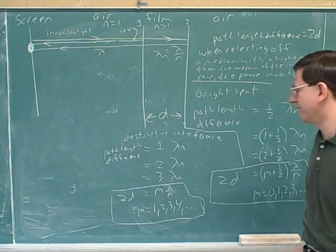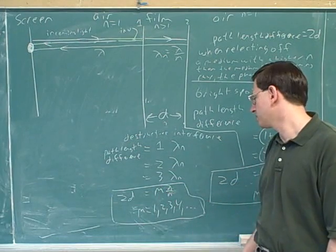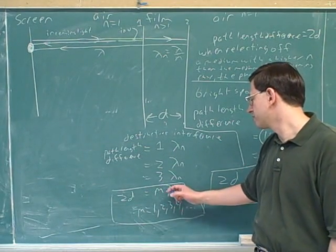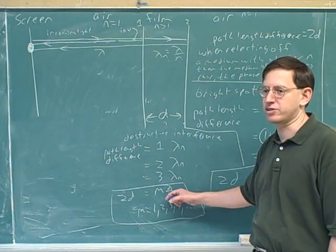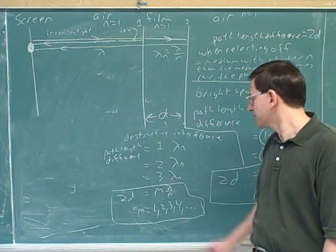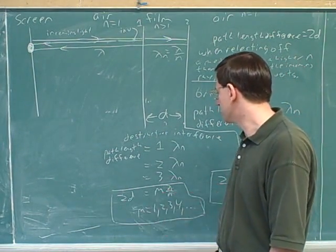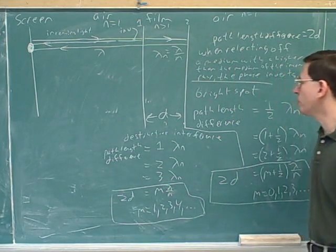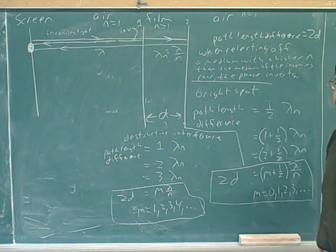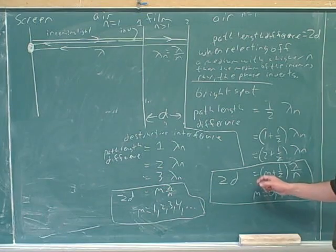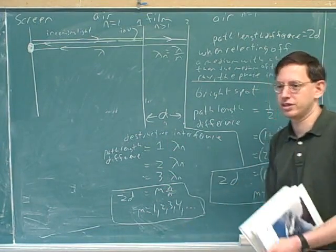All right, so the formula I had before was wrong. This is the correct formula that takes into account that inside the film, the original wavelength has been decreased by a factor of n, just like the original speed has been decreased by a factor of n. So this is the formula that we would use for destructive interference. So if you want to know what colors you will see reflected off the film, you would use this equation. But if you want to know what colors you won't see, you would use this equation.